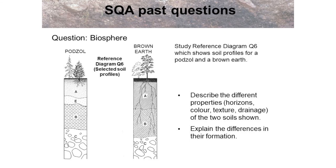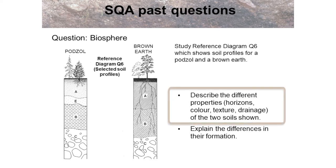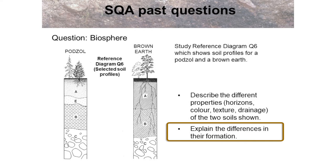We now have some past paper questions for you; each question slide is followed by an example answer. Have fun answering them and go back to earlier slides to check your answers. Above all, remember to enjoy learning about soil science — it's such a fascinating subject. This is an SQA past paper question: study the reference diagram showing soil profiles for a pod soil and a brown earth. Describe the different properties — horizons, colour, texture, drainage — of the two soils shown and explain the differences in their formation.